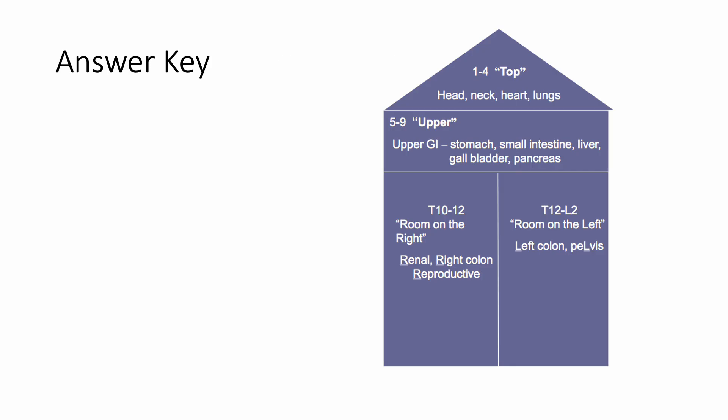This is the guide I used to answer all of the questions on Comlex — I put this on my cheat sheet as soon as I sat down to take the exams. We just have to remember: the top of the house is T1 through T4 — these are the head and neck, heart, and lungs. The middle part is T5 through T9, which is our upper GI. On the right is T10 through T12 — the R letters: renal, right colon, reproductive organs. The room on the left is T12 through L2, which is left colon and pelvis.